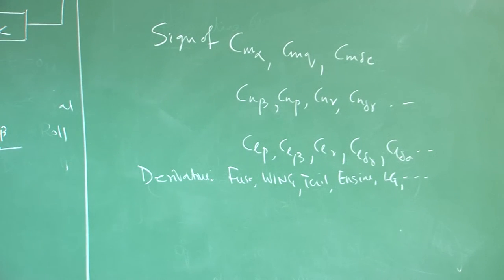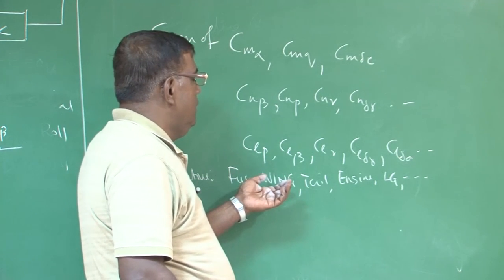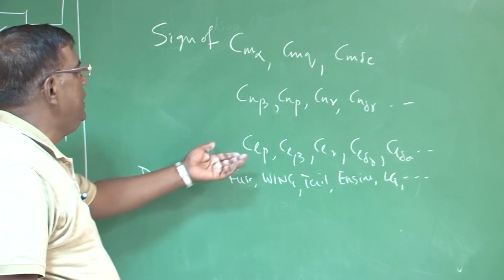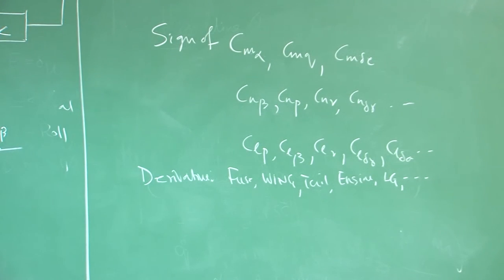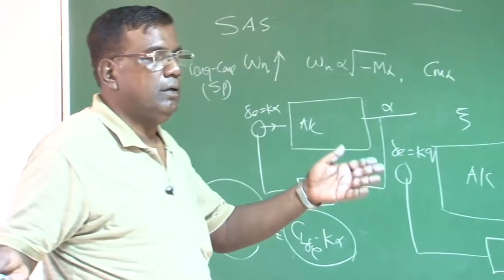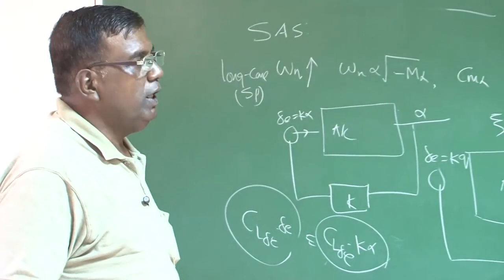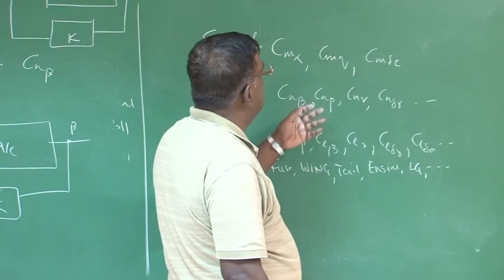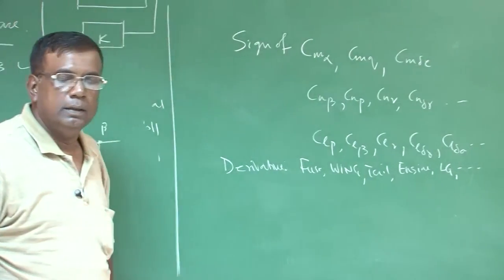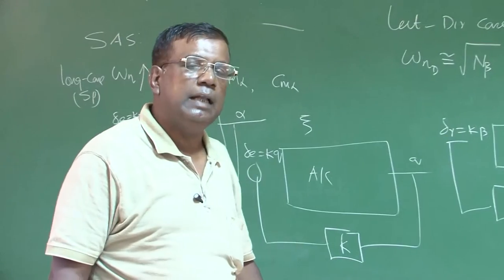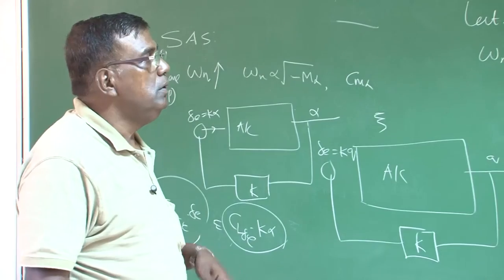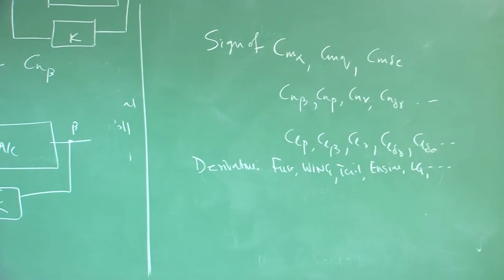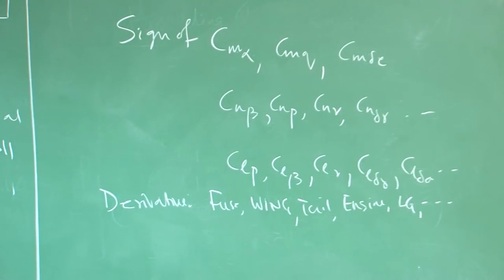You will also notice that few of the derivatives will have huge contribution from a particular component. For example, C_m_alpha, the major component which will contribute will be the tail, right. C_Lp, major contributor will be the wing, right. So that as a designer, you should clearly understand what are those components of the airplane who contributes to this derivatives. So that you can really design appropriately as a initial guess, right. Suppose if you want to increase stability margin and you are going on increasing C_m_q, right, then something is wrong, because C_m_q is the damping, contributes to a damping. So if you are thinking in terms of increasing the damping ratio, we will focus on C_m_q and see how C_m_q can be increased. If you are talking about increasing stability margin, I look towards how to increase C_m_alpha, and there you will find how tail volume ratio plays an important role, ok.